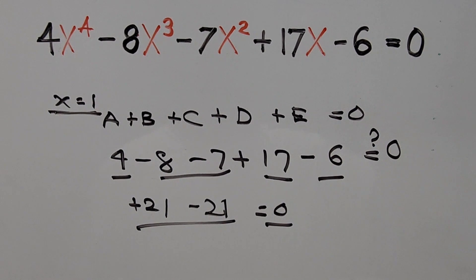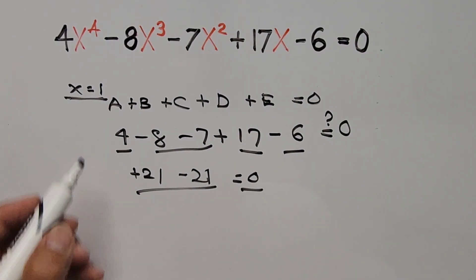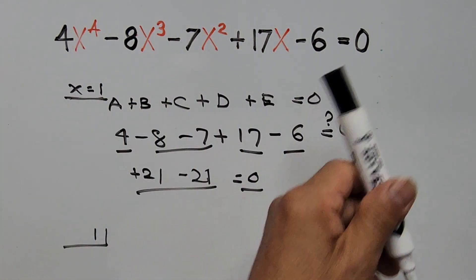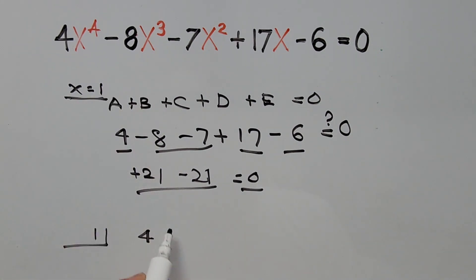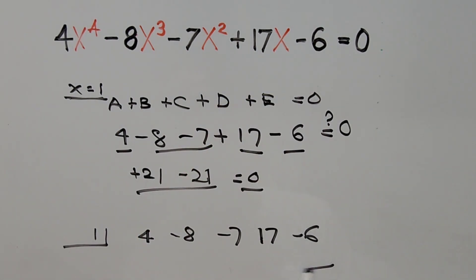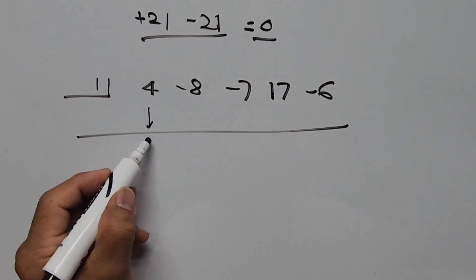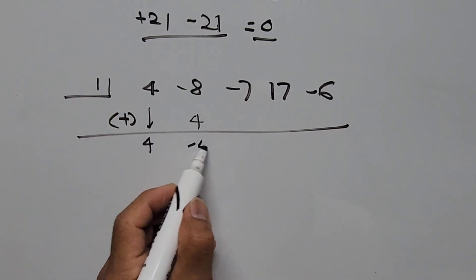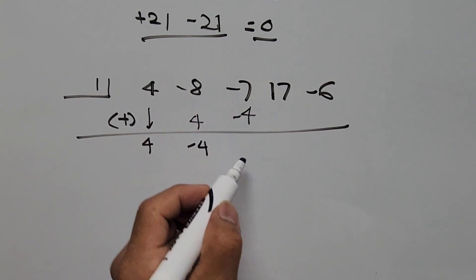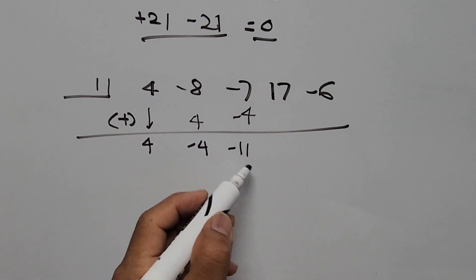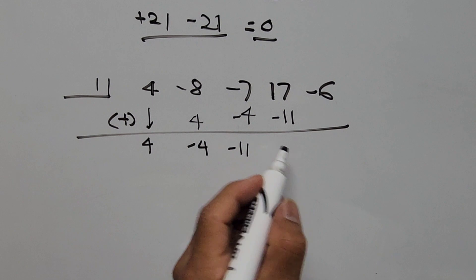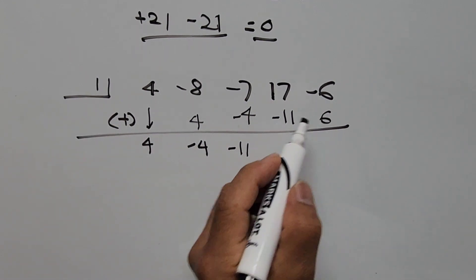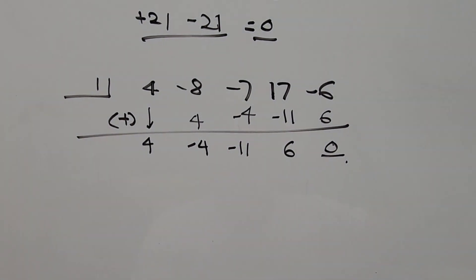From here we'll use synthetic division to find the other factor of the equation. Putting 1 on the outside and writing the coefficients: 4, negative 8, negative 7, 17, negative 6. Bring down 4. Then 1 times 4 is 4; adding gives negative 4. Then 1 times negative 4 is negative 4; adding gives negative 11. Then 1 times negative 11 is negative 11; adding gives positive 6. Then 1 times 6 is 6; 6 minus 6 equals 0, so the remainder is 0.